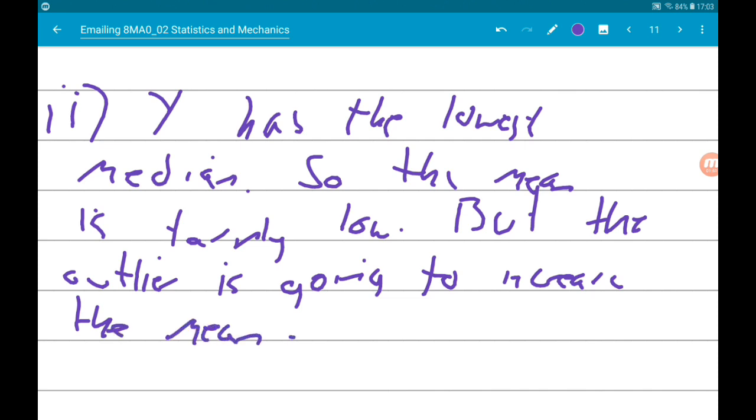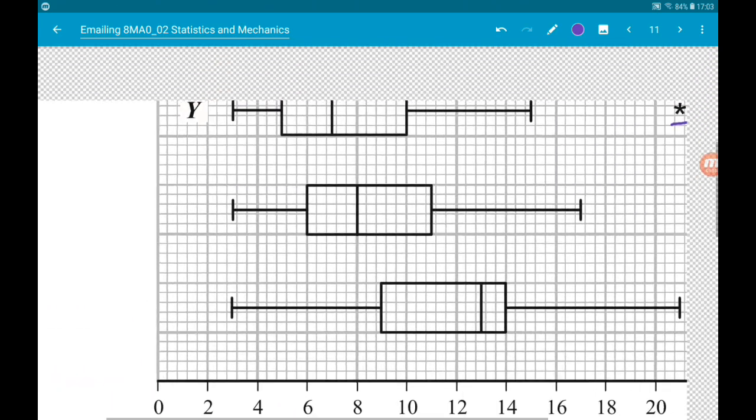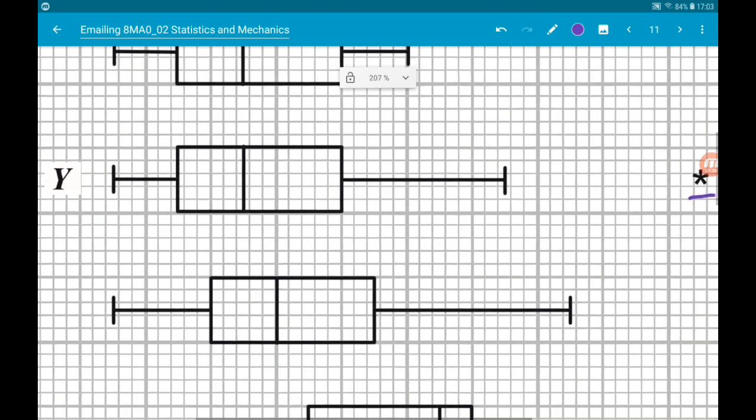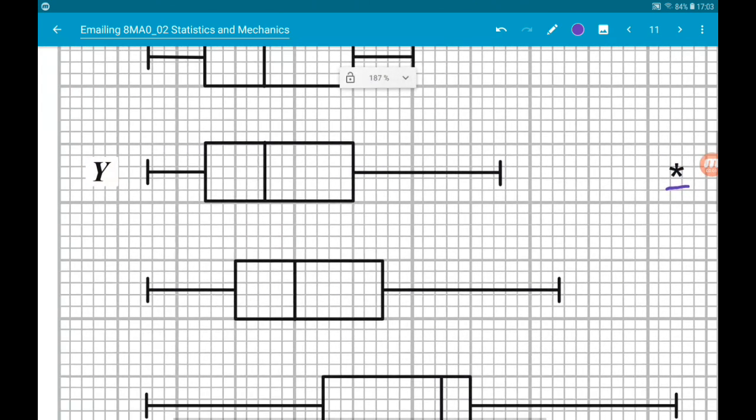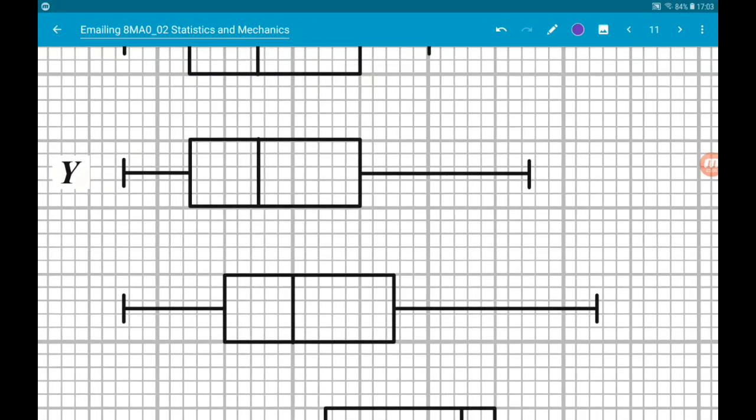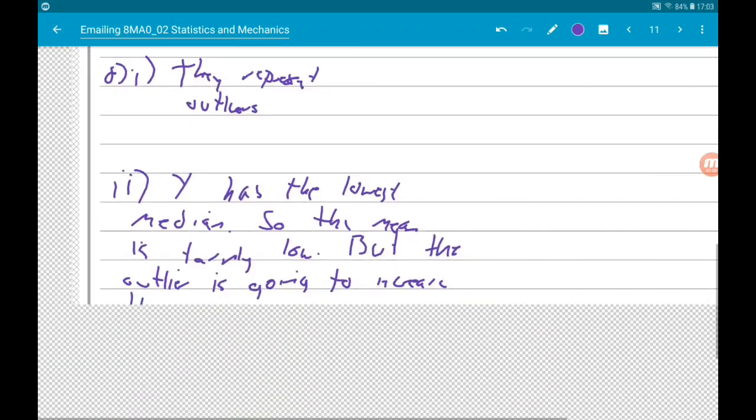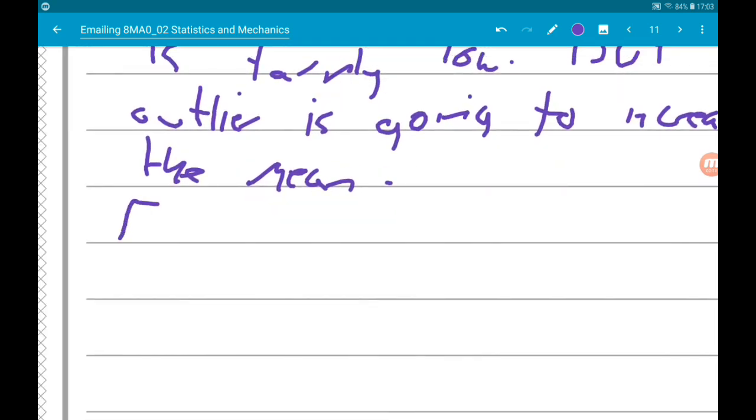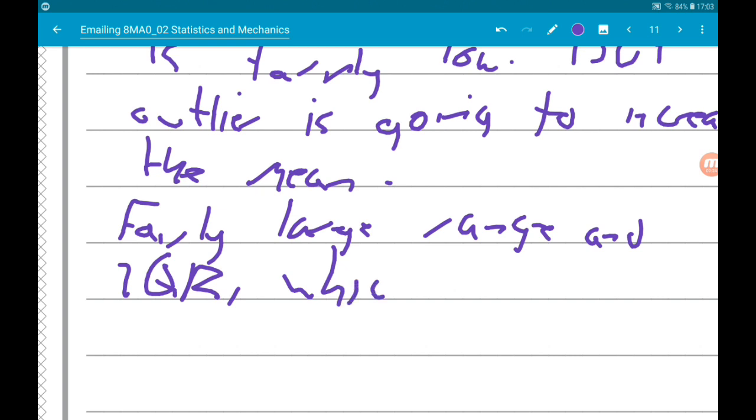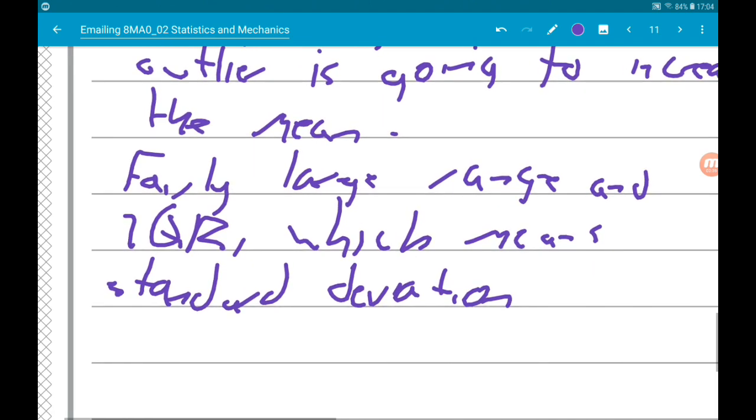Now if we also look at the spread of the data, there is a fairly big range and also a fairly big interquartile range. So there is a fairly large range and interquartile range, which means the standard deviation is going to be quite large.